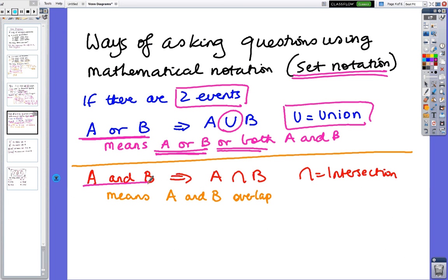If I want A and B, the symbol is this upside down U, and that means intersection, and that means it's the overlap. So A or B is A or B or both, but the intersection is just the overlap. Copy that down, we'll have a look at some questions.